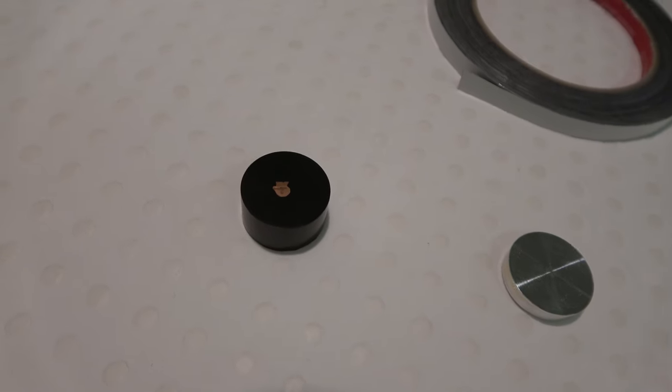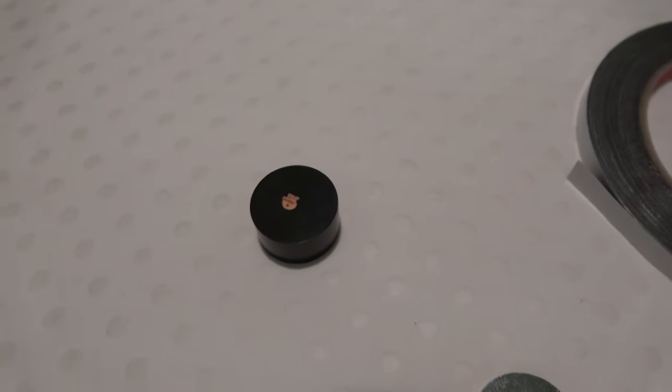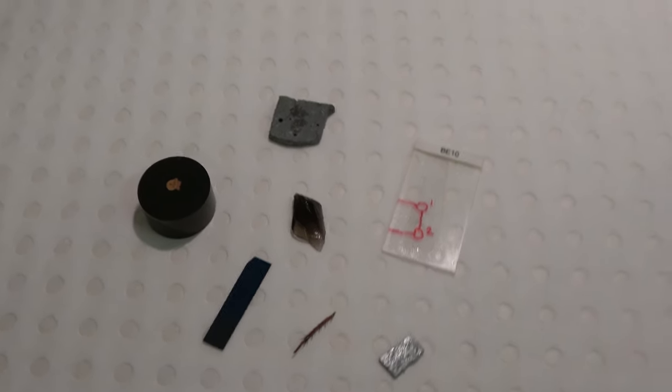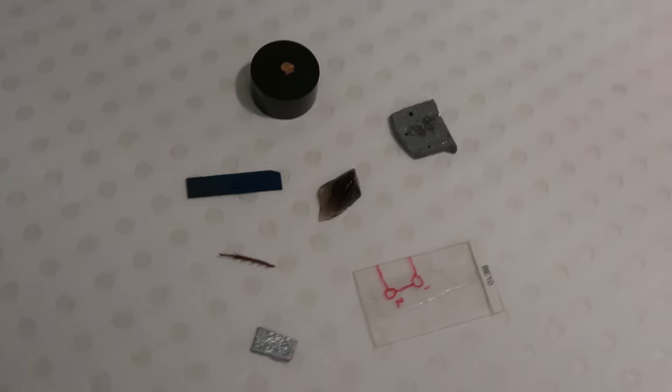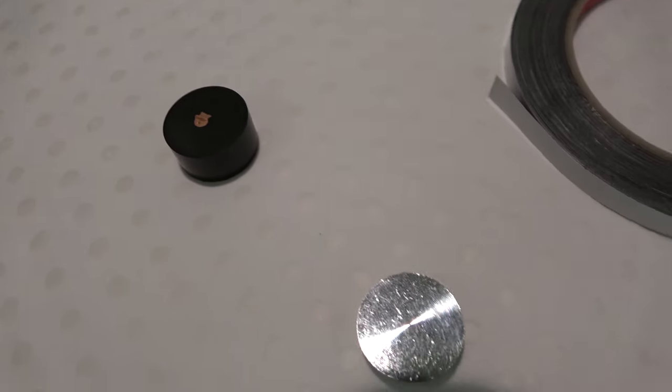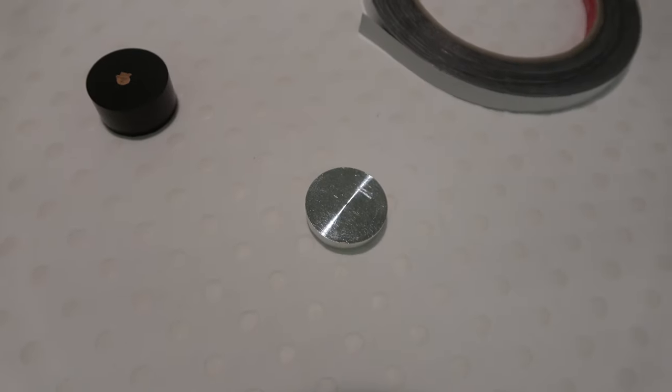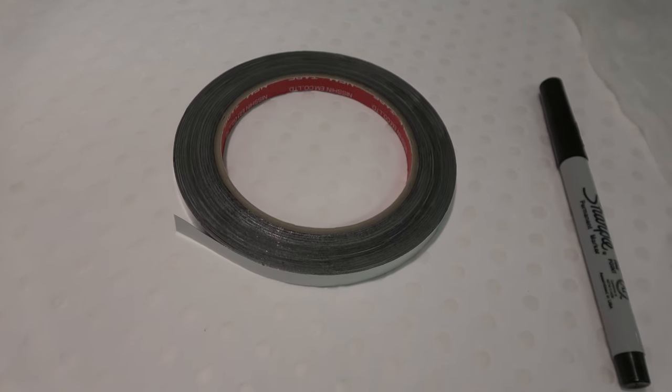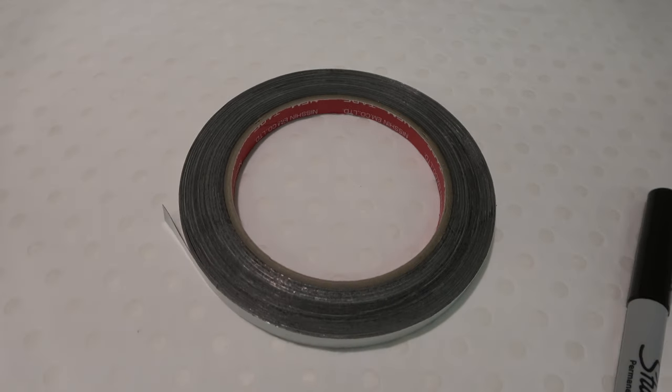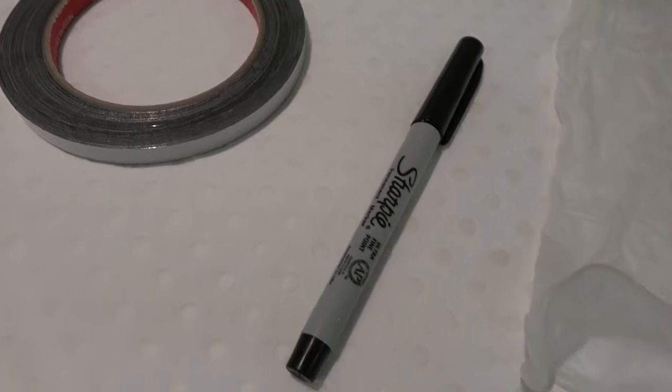Materials: A sample or piece of sample - use the smallest piece possible that you can easily manipulate and that contains your features of interest. An SEM stub. Double-sided adhesive - at the EMU, we provide users with double-sided conductive carbon tape. A fine permanent marker. Gloves.